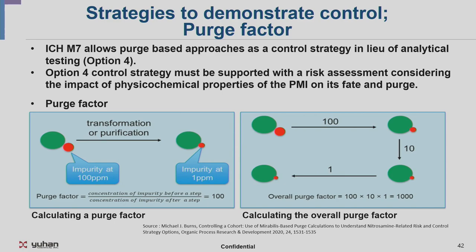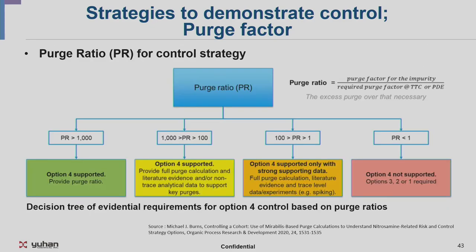The purge factor is used to calculate how much of the impurities generated during production and storage are purged. The concentration of impurities would be calculated using the overall purge factors. For the purge ratio in the control strategy, the level of the impurity must be below the allowed limit. The purge ratio shows: if the end result is closer to the limit, the higher the risk, and the higher the risk, the more information or data is needed. If the purge ratio is more than 1,000 — option 4 — no analytical evidence is needed. If between 100 and 1,000, purge calculation, literature evidence, and test data would be required. If below 100, a more conservative method is needed. If the purge ratio is less than 1, option 4 cannot be supported and purge factor cannot be used.